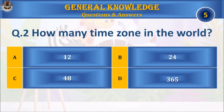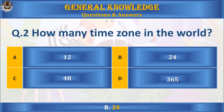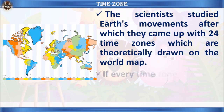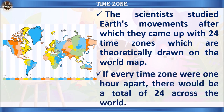Question 2: How many time zones are in the world? A) 12, B) 24, C) 48, or D) 365. Your time starts. The answer is B) 24. Scientists studied Earth's movements and came up with 24 time zones, which are theoretically drawn on the world map. If every time zone were an hour apart, there would be a total of 24 across the world.